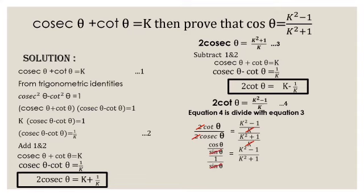Now cancel sin theta. We get cos theta equal to k squared minus 1 by k squared plus 1.